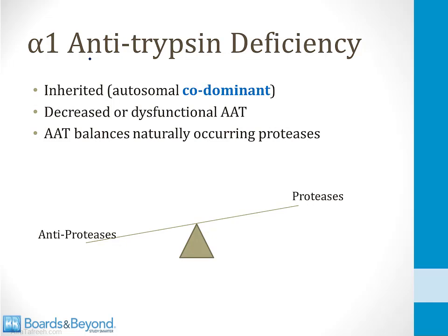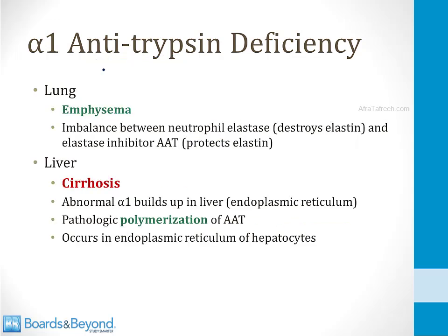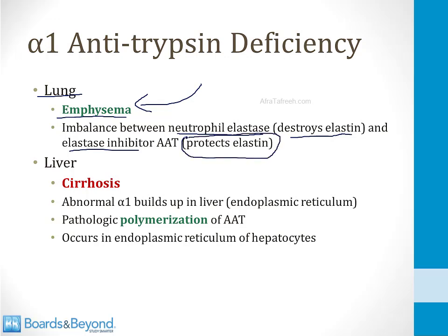Alpha-1 antitrypsin deficiency is a rare inherited disorder, inherited in an autosomal codominant fashion. Children born with this disorder have decreased or dysfunctional alpha-1 antitrypsin, which is supposed to balance naturally occurring proteases. In many tissues, especially in the lungs, there are naturally occurring proteases which can destroy tissue, and anti-proteases like alpha-1 antitrypsin balance those so they don't destroy our own tissues. When children are born with this deficiency, they get autodigestion of tissue in the lungs leading to emphysema at an early age even as a non-smoker, because there's an imbalance between neutrophil elastase — a protease that destroys elastin — and its inhibitor, alpha-1 antitrypsin.